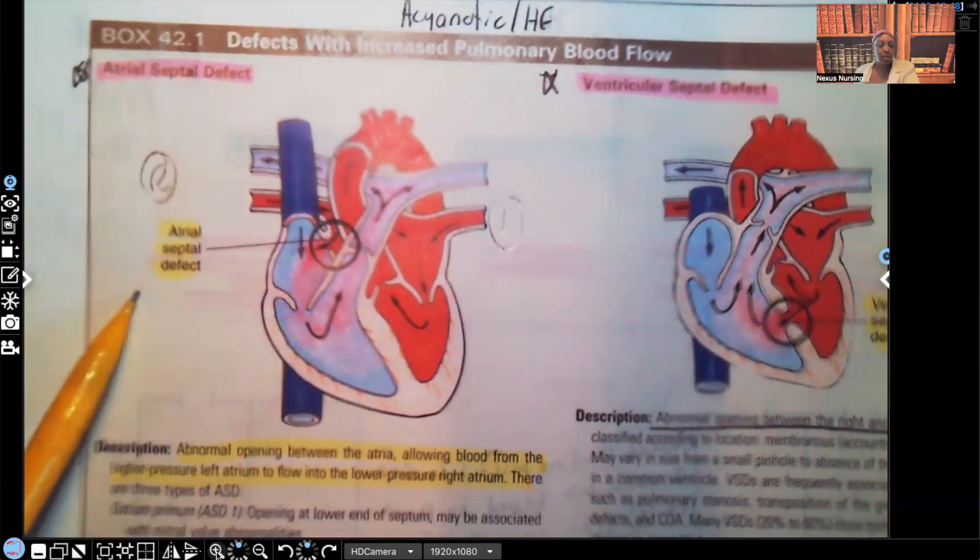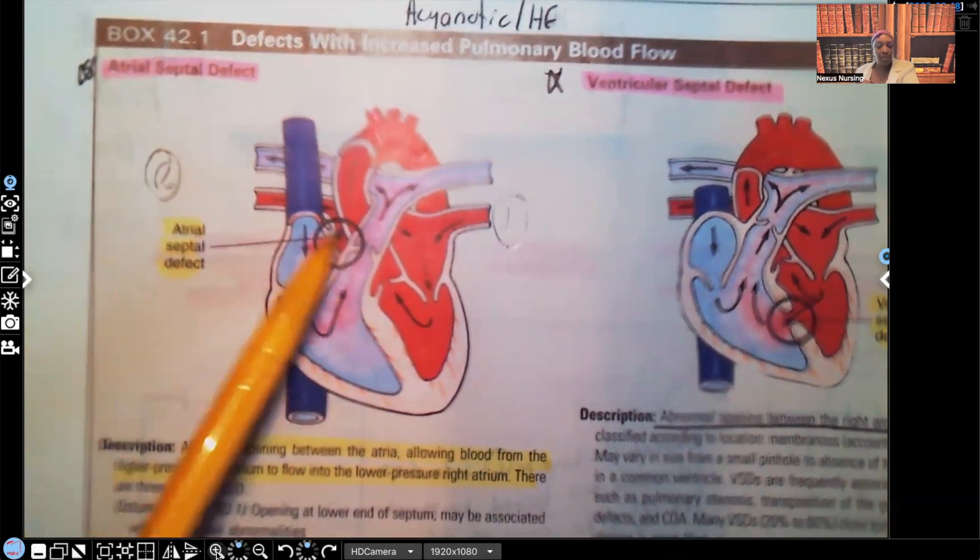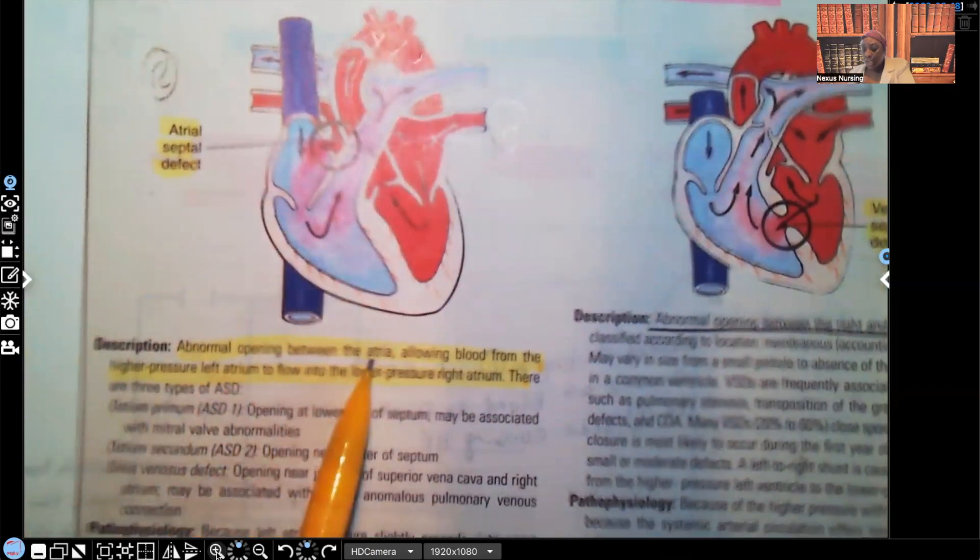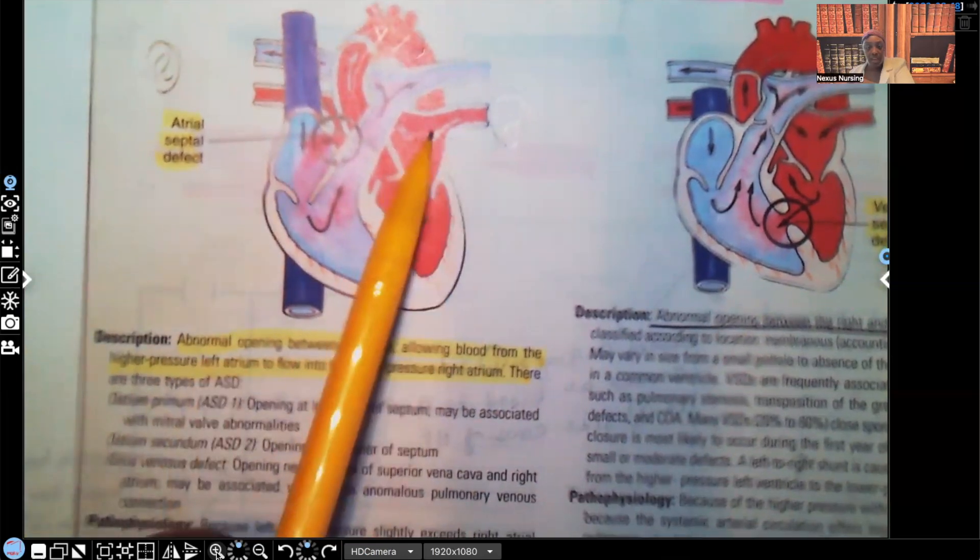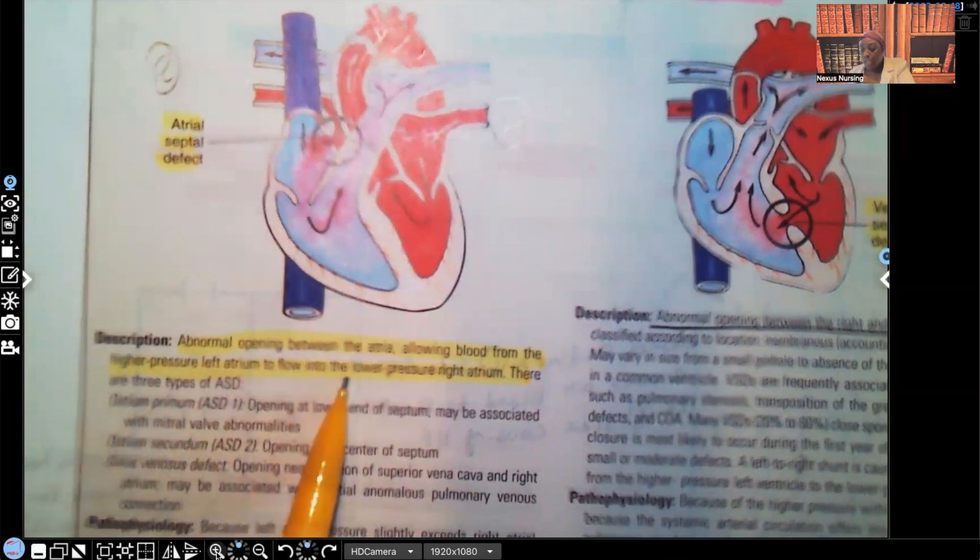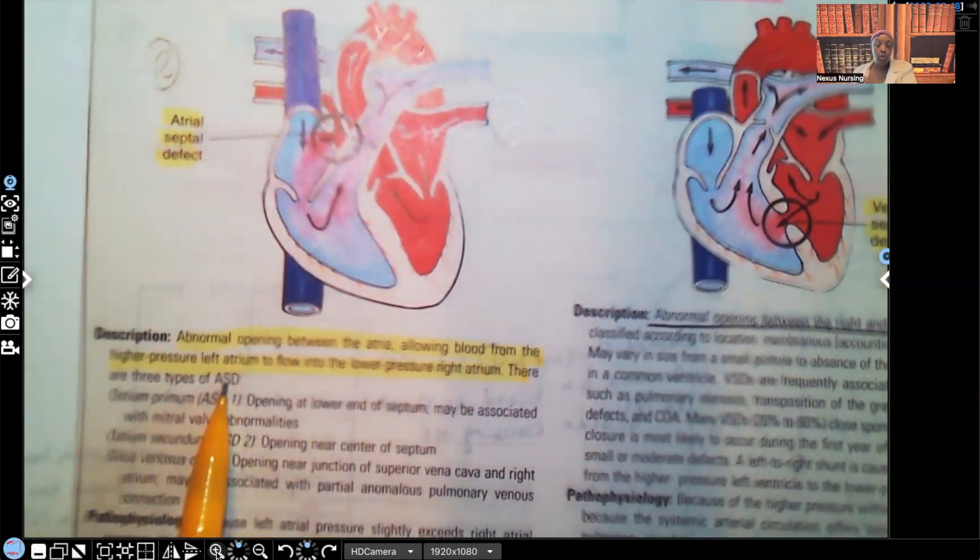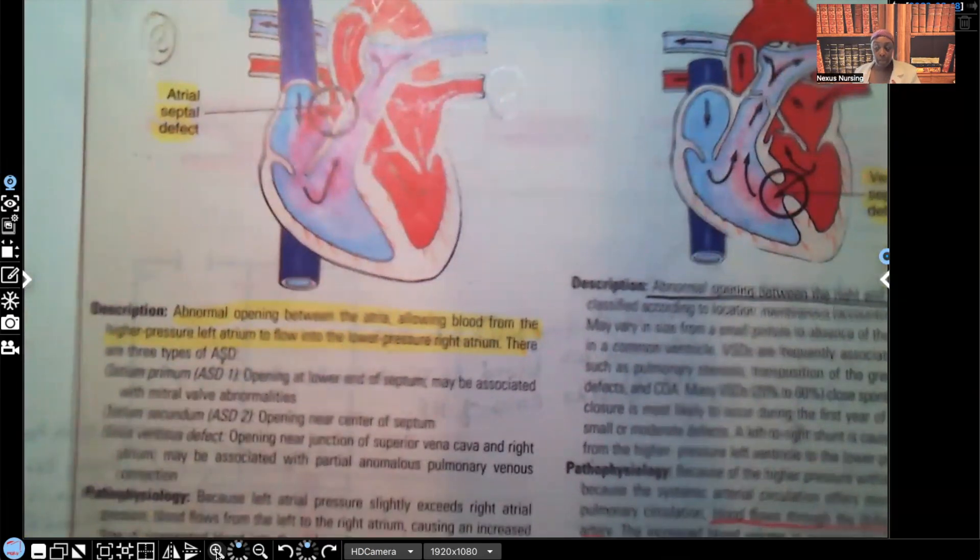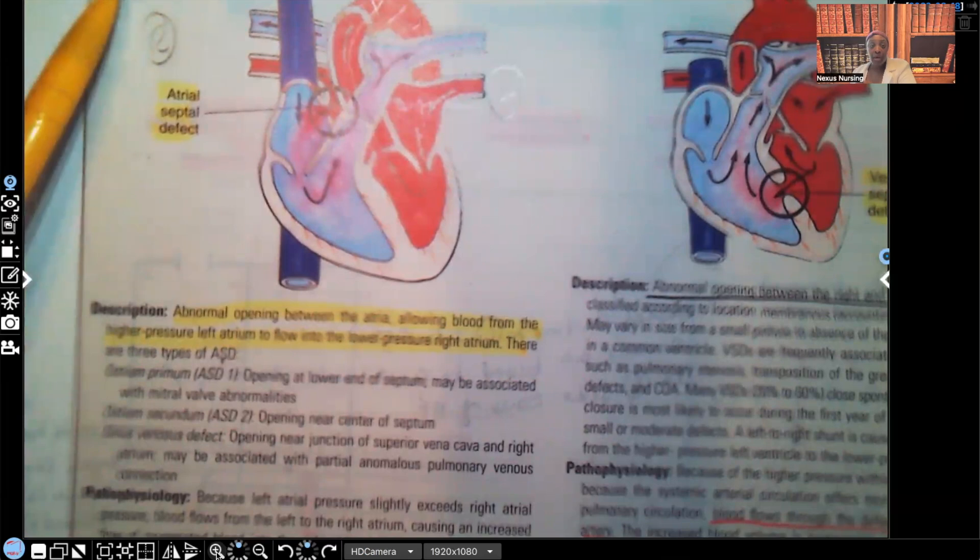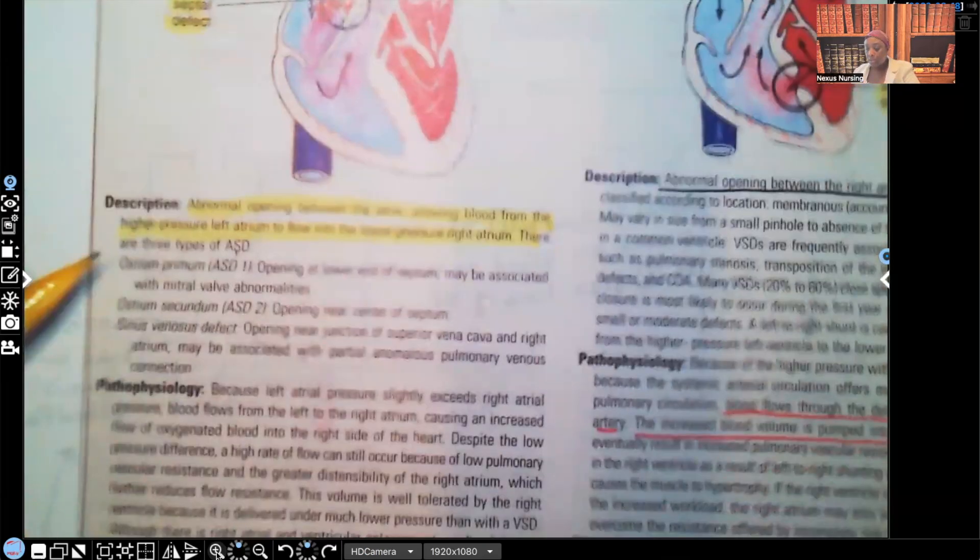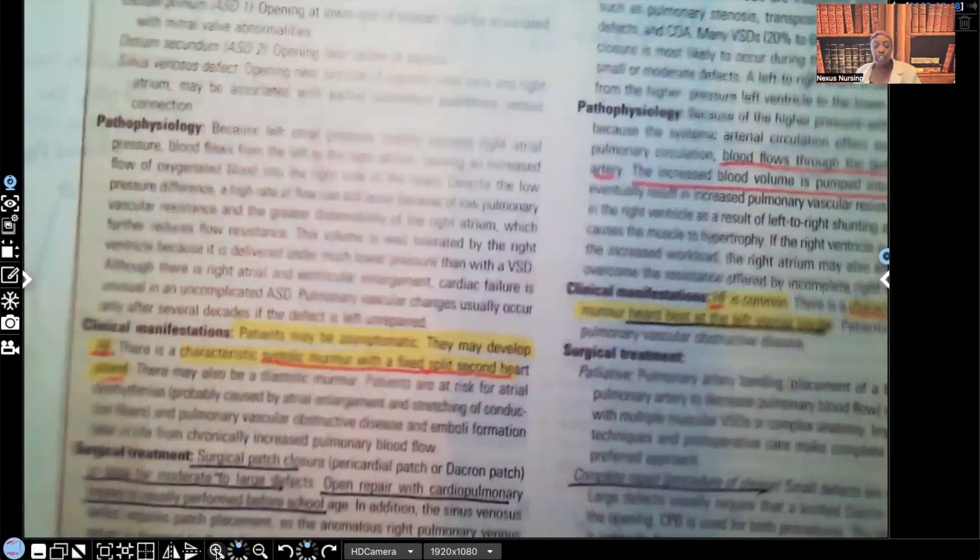This is why it's called atrial septal defect because that defect is between the two atriums from the left to the right. The description says abnormal opening between the atria, allowing blood from the higher pressure left atrium to flow into the lower pressure right atrium. There are two types of ASD. I don't know if your instructor is going to give those three types on your test. However, for the big exam, such as ATI, HESI, NCLEX, I've never seen them ask specifically about those three. What they ask about is the main one, which is your atrial septal defect.